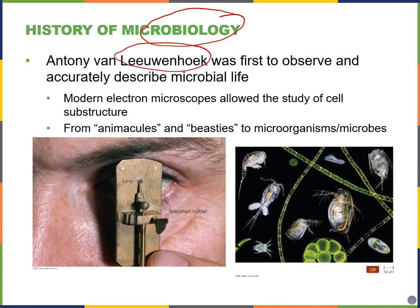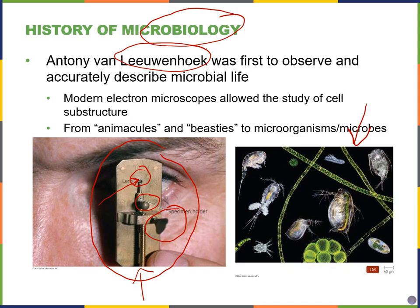Leeuwenhoek is credited with making the first microscopes, and they look like this. You can see a tiny little lens here. You would put your specimen at the tip of the needle, and there are a few knobs that work similarly to the knobs on our own microscopes that move the slide around over the stage. He was a cloth merchant and also a lens maker. He would make many different microscopes, each set with a specific specimen. He was a really curious guy — he examined water, feces, pond water, and human samples. He saw little things and used to call them animocules or beasties.